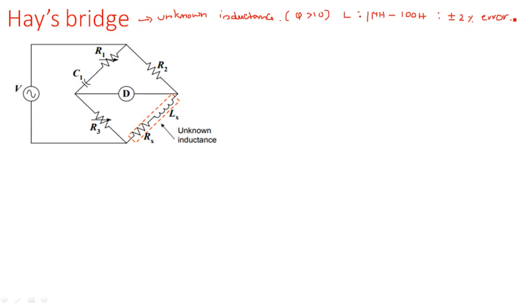Hay's Bridge is also used to measure unknown inductance value. The difference from Maxwell's Bridge is that Hay's Bridge measures inductance in the range of 1 micro Henry to 100 Henries, whereas Maxwell's Bridge measures from 1 Henry to 1000 Henries. The error is also common at plus or minus 2 percent, but the quality factor for Maxwell's Bridge was less than 10, while here it is greater than 10.